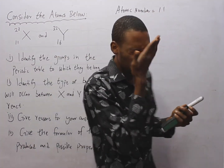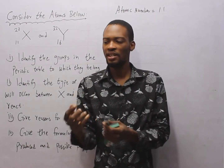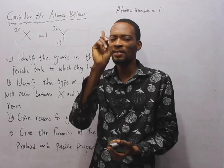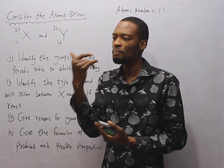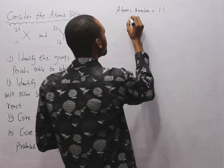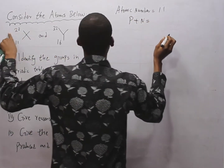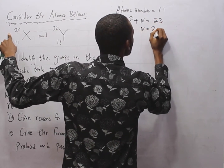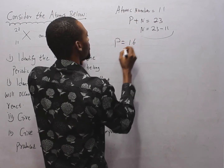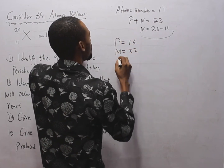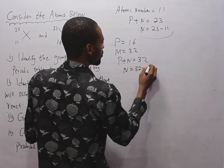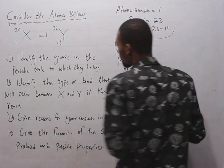The atomic number is the number of protons an element possesses. For element S with atomic number 11, the mass number is 23; since mass = protons + neutrons, neutrons = 23 − 11 = 12. For element Y with atomic number 16, mass number is 32; neutrons = 32 − 16 = 16.